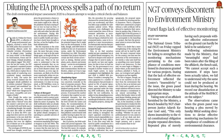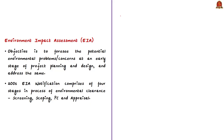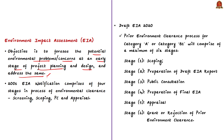This editorial is about the draft Environmental Impact Assessment 2020. The author criticizes that the draft dilutes the existing EIA and attempts to weaken critical checks and balances present in the EIA 2006 notification. The existing EIA's objective is to foresee potential environmental problems at an early stage of project planning and design and then address these concerns. The draft EIA 2020 attempts to bring in many changes to the process of environmental impact assessment.